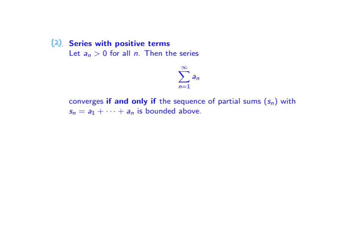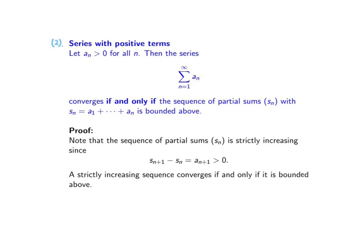The second test applies for series with positive terms. It states that if a_n is greater than zero for all n, then this series converges if and only if the sequence of partial sums S_n is bounded above. Since all terms a_n are positive, the sequence of partial sums S_n is strictly increasing, because the difference S_{n+1} minus S_n equals a_{n+1}, which is positive. Therefore, this sequence is strictly increasing.